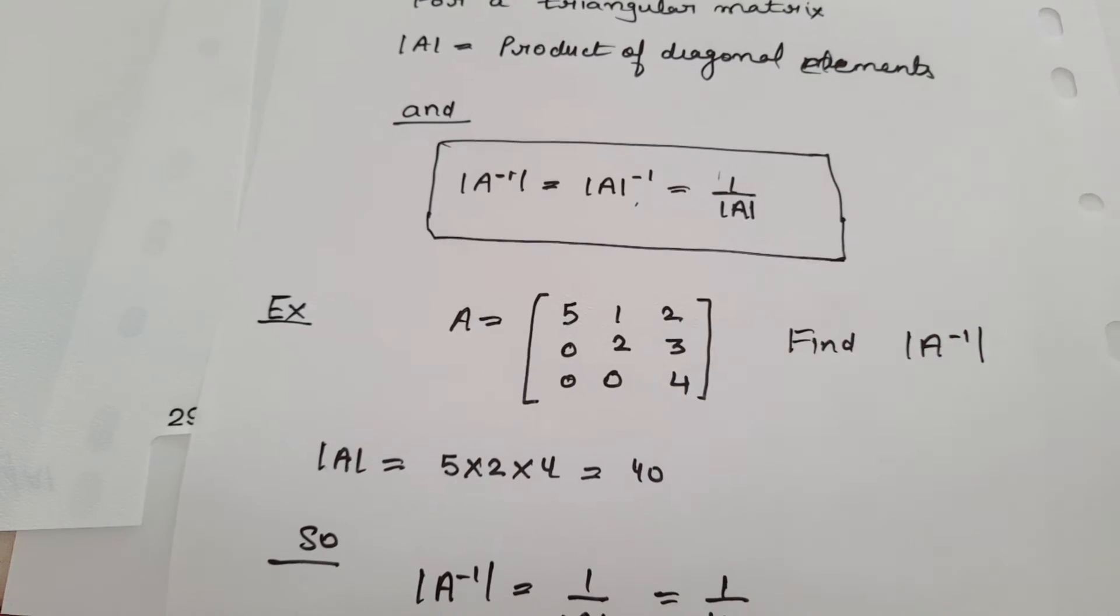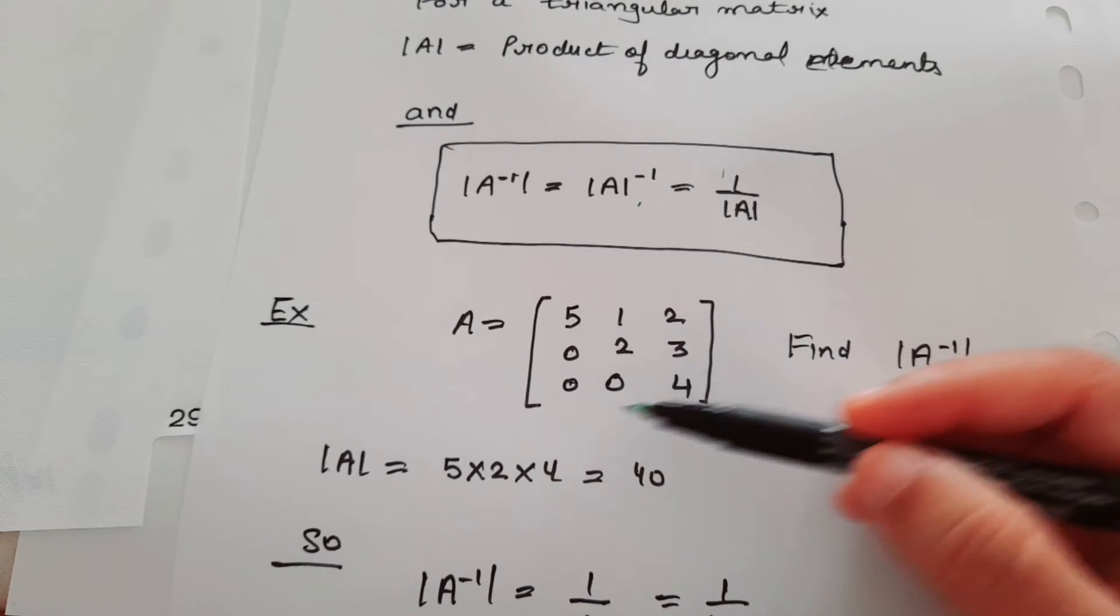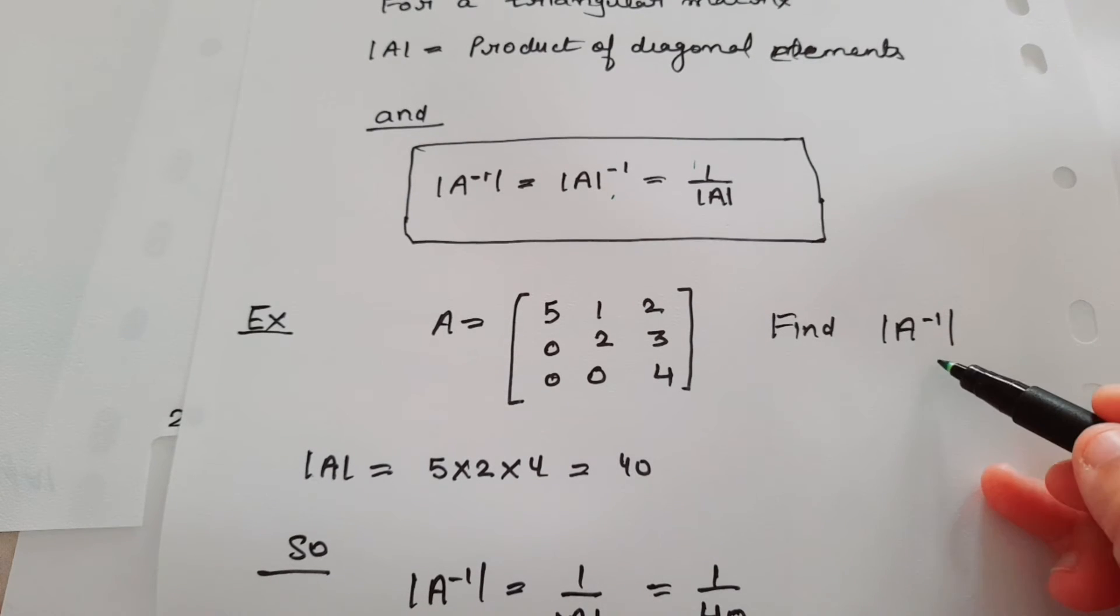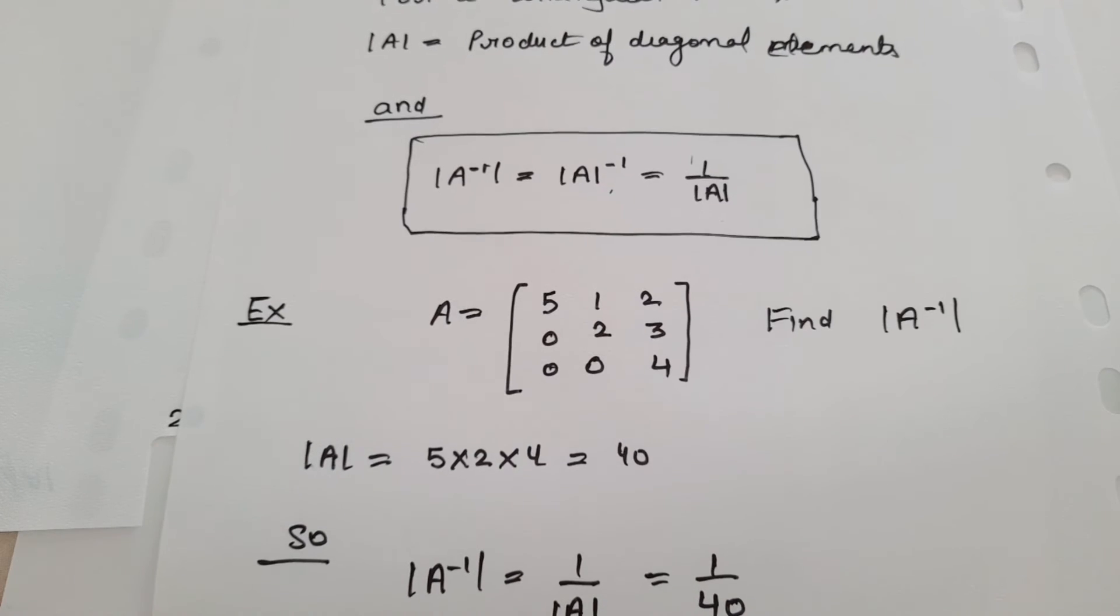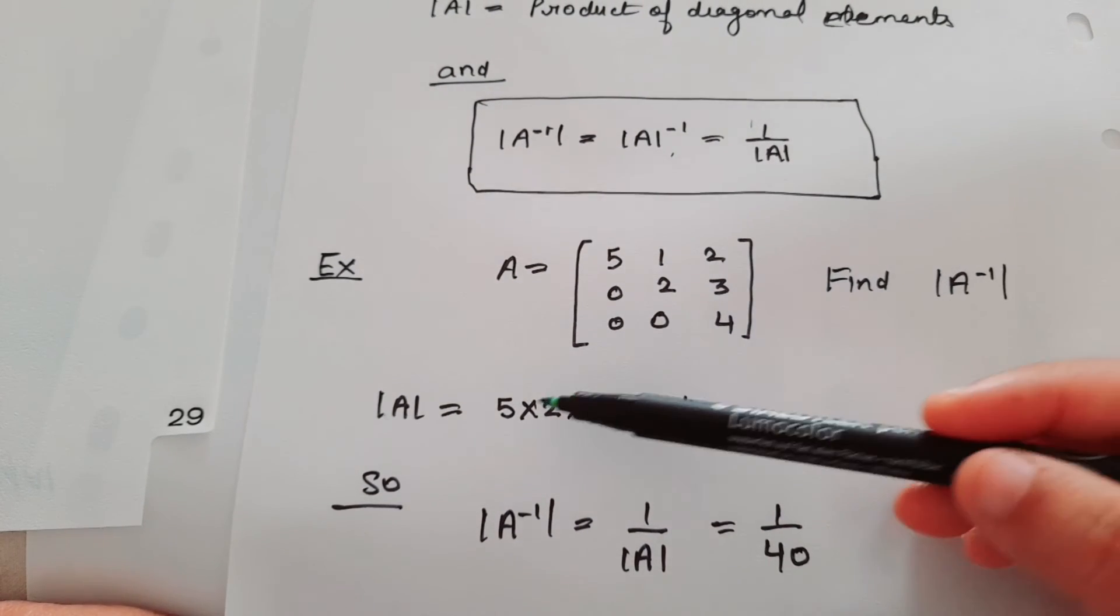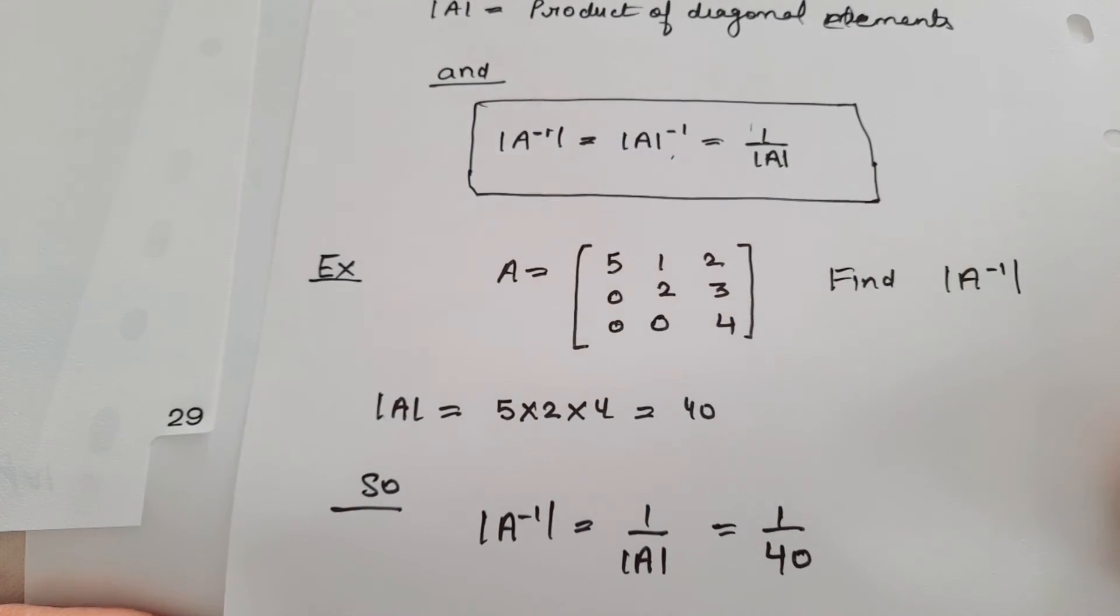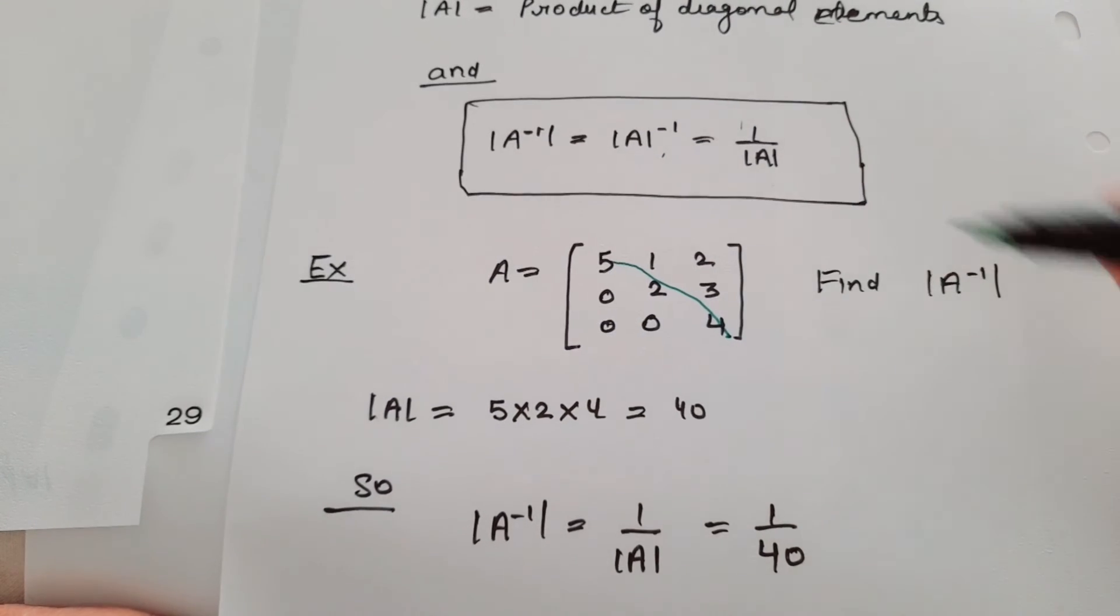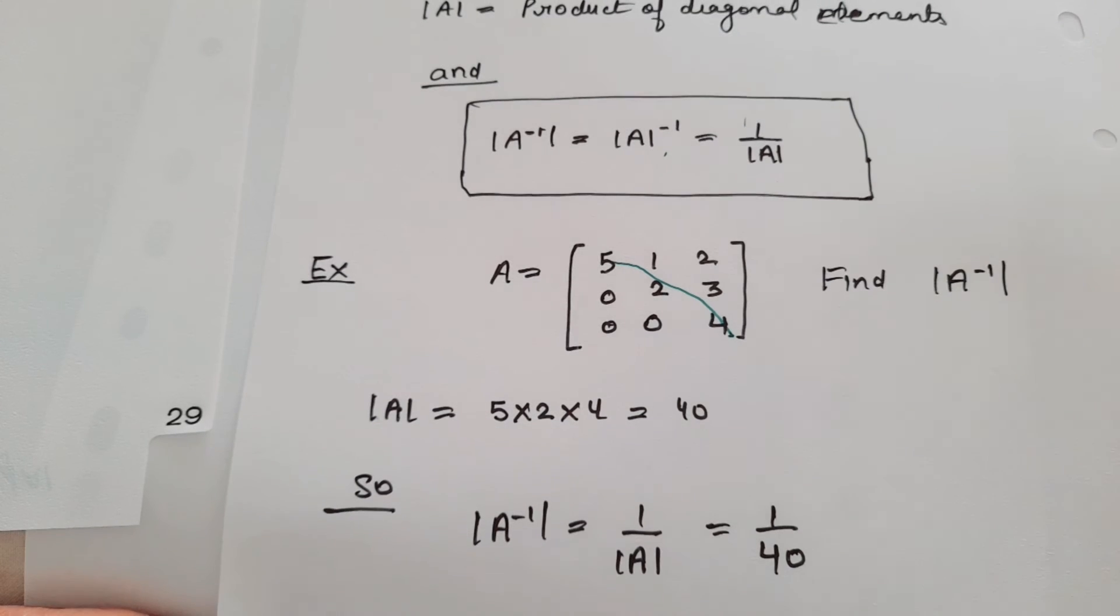you have a matrix A is equal to 5 1 2, 0 2 3, 0 0 4 and you need to calculate determinant of A inverse. First of all, what we will find, we will find determinant of A and this is 5 multiplied 2 multiplied 4, product of diagonal elements, this is diagonal.